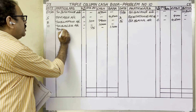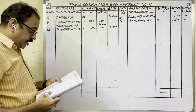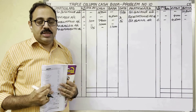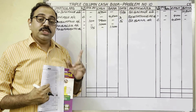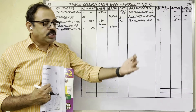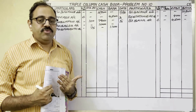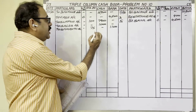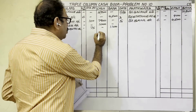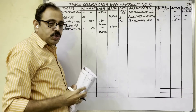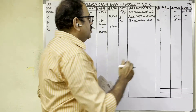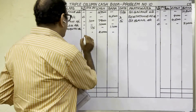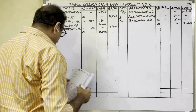Sixteenth date: cash withdrawn from bank 2,000 rupees. Withdrawing cash from bank is a contra entry — same as depositing cash into bank. Cash is coming to us, so debit side cash column: 2,000 rupees. Bank balance is decreasing, so credit side bank column: 2,000 rupees. In the ledger folio column, write 'C' for contra on both sides.